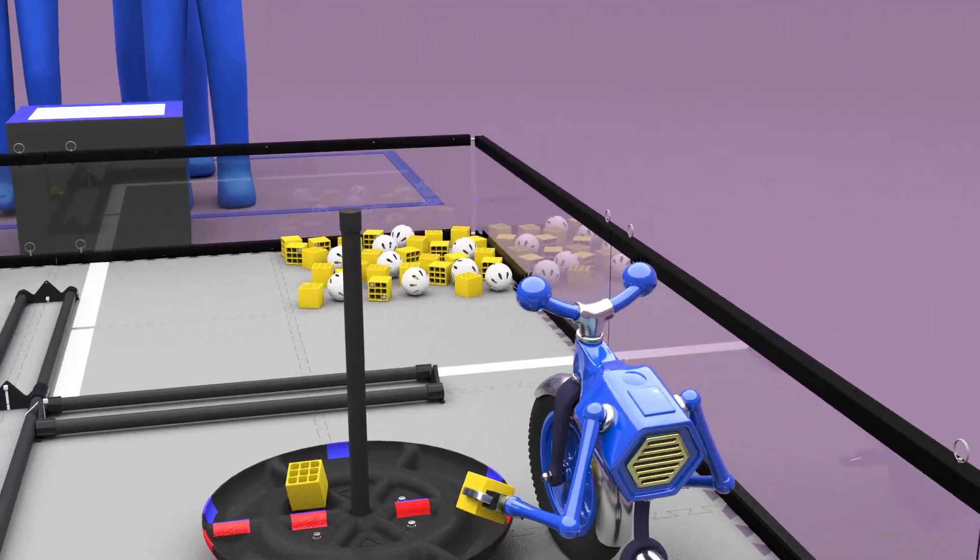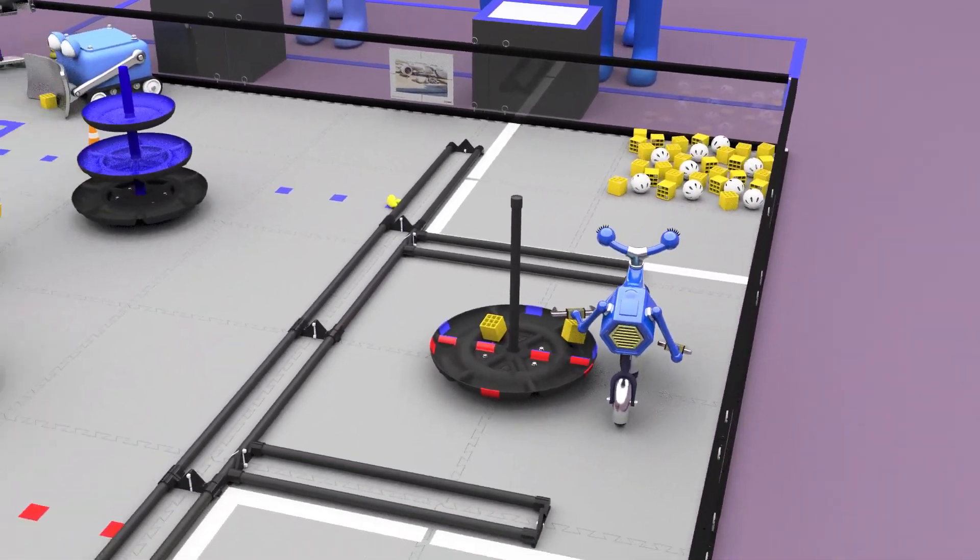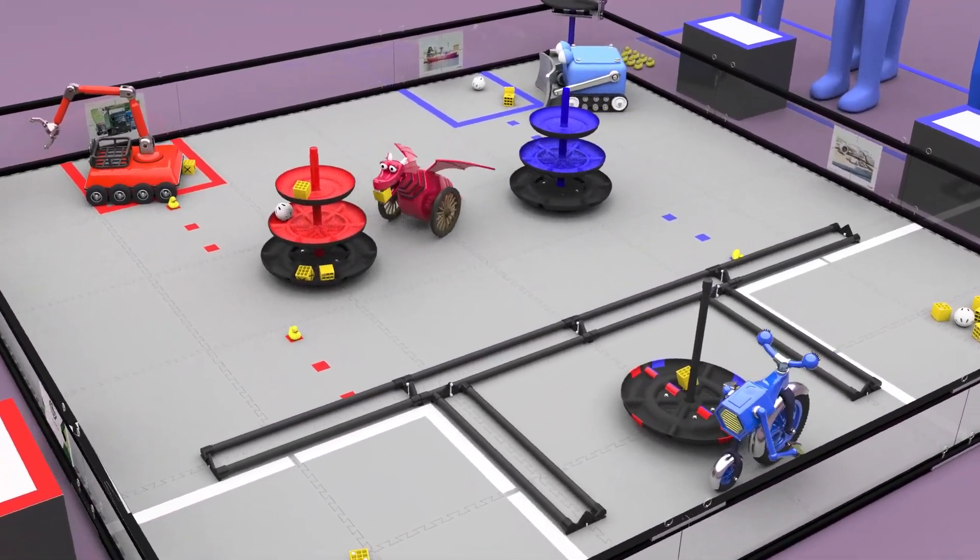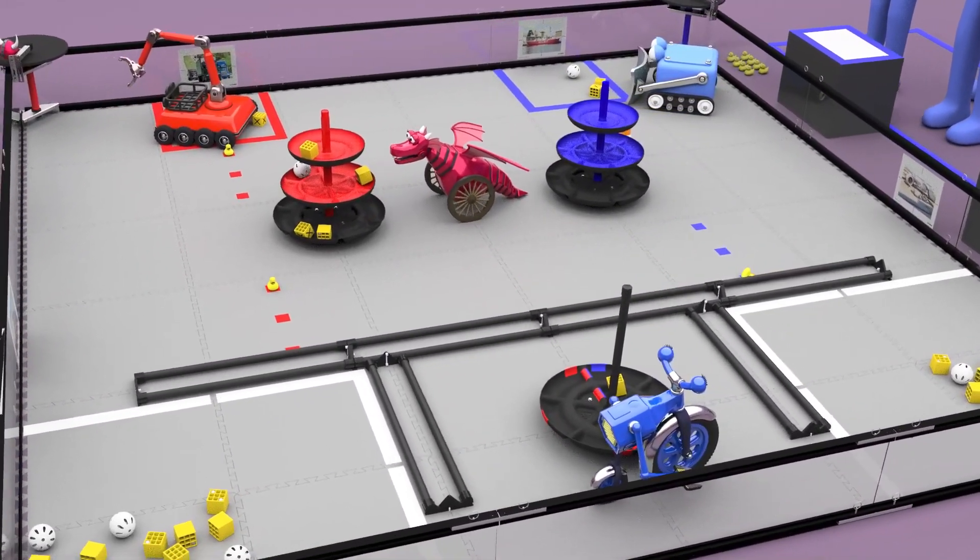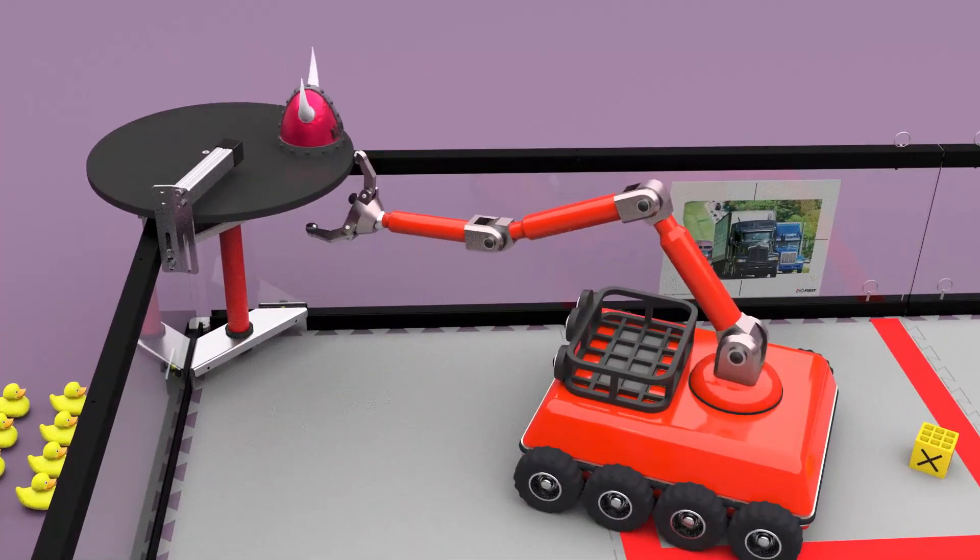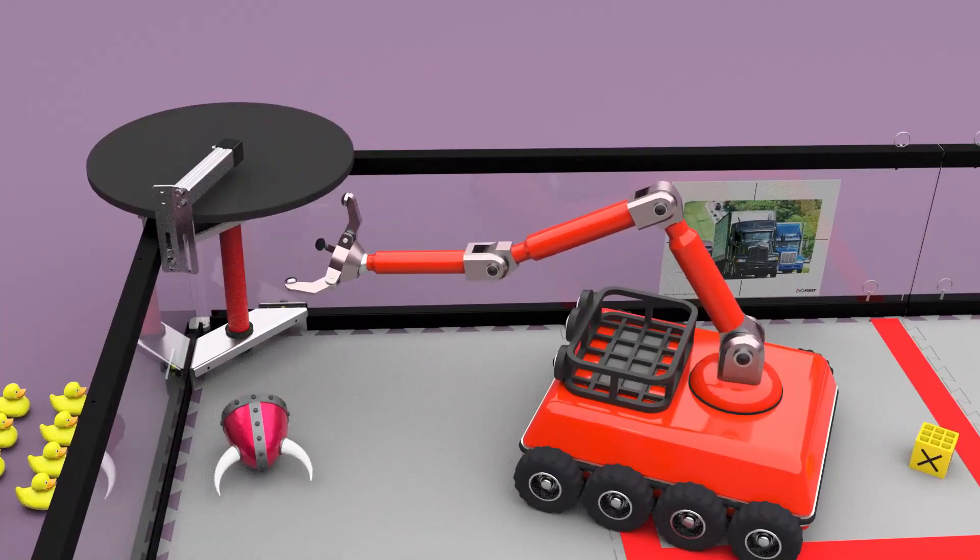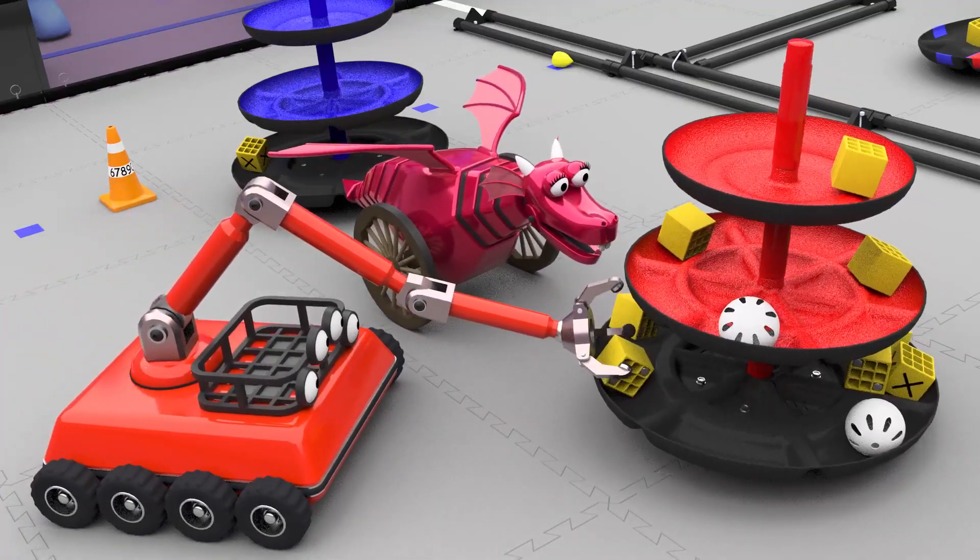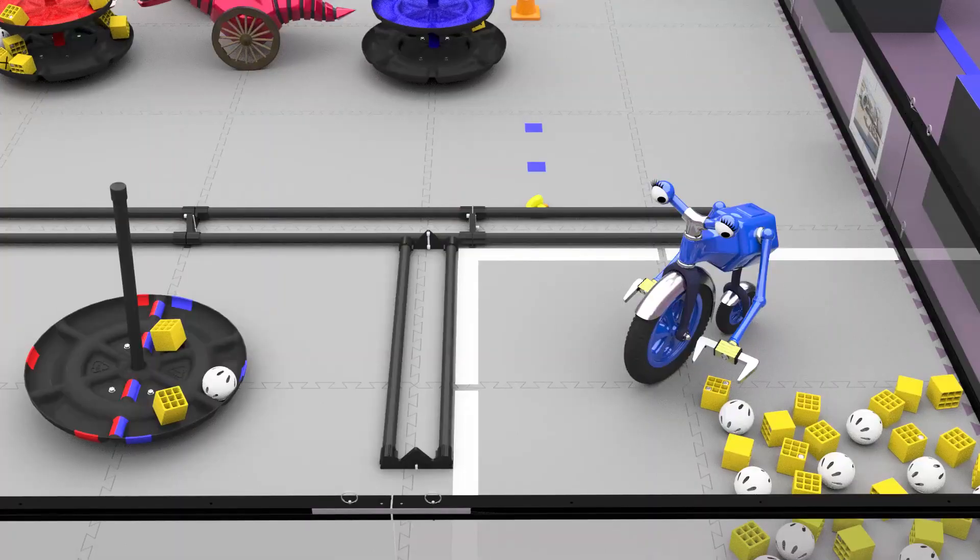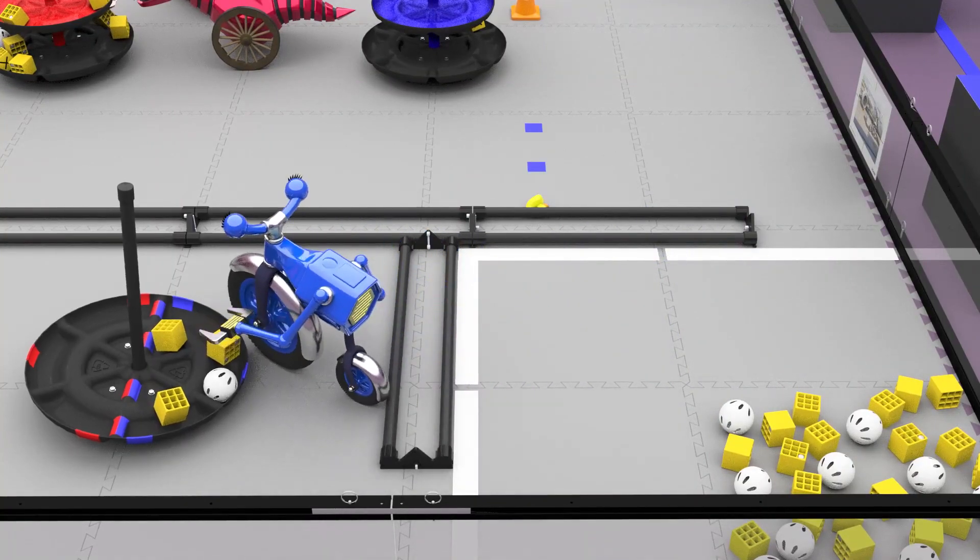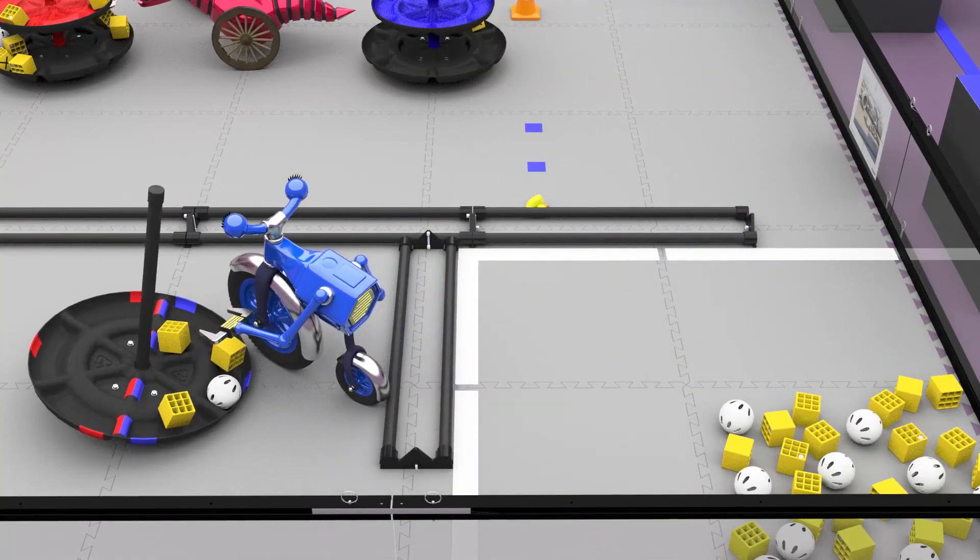The last 30 seconds of the driver control period is the endgame. Robots may continue scoring freight, and there are also ways to earn bonus points. Delivering a duck or shipping element to the floor earns the alliance six points. A balanced shipping hub at the end of the match earns 10 points. If an alliance's section of the shared shipping hub is in contact with the tile floor, that alliance earns 20 points.